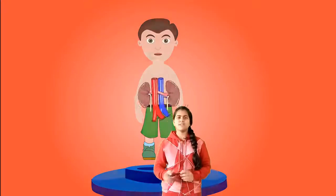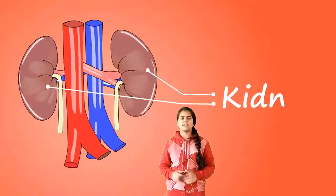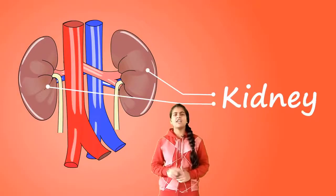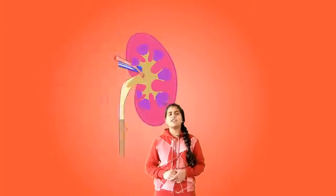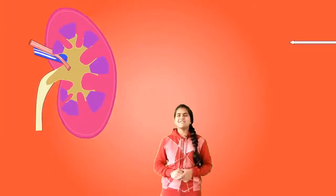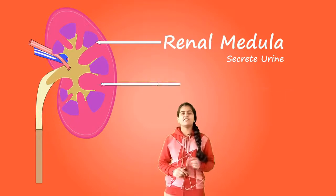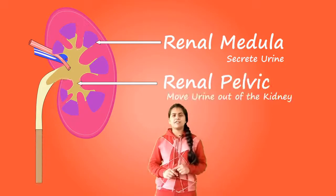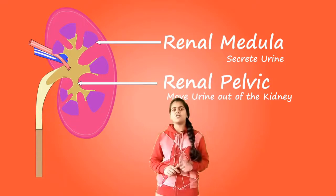Inside each kidney, there are about 7 to 10 cm long and 2.5 to 4 cm across. Our kidney shows two main regions: outer cortex and inner medulla. In the cortex region, urine is made and formed in the medulla. The urine falls into a cavity called renal pelvis, and from there into the urethra.